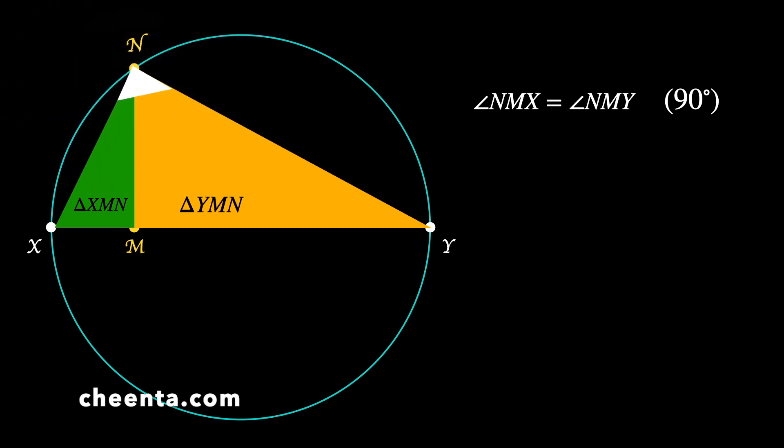Look at angle XNY. That's clearly 90 degrees. Can you tell me why angle XNY is 90 degrees? This is a very important fact in geometry. Do you know how to prove this? Put a comment in the description with a complete proof of the fact that angle XNY is 90 degrees given XY is the diameter. Give me a geometric proof.